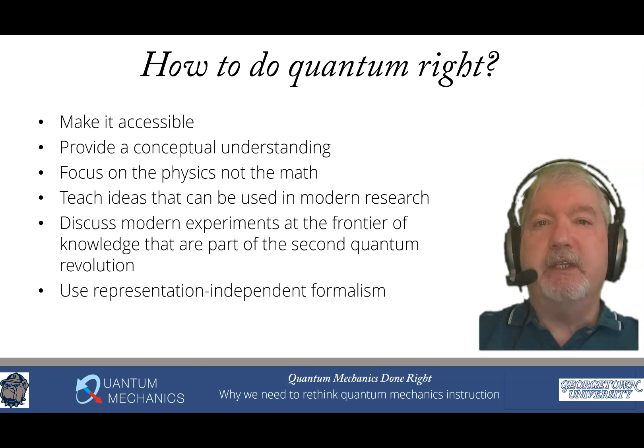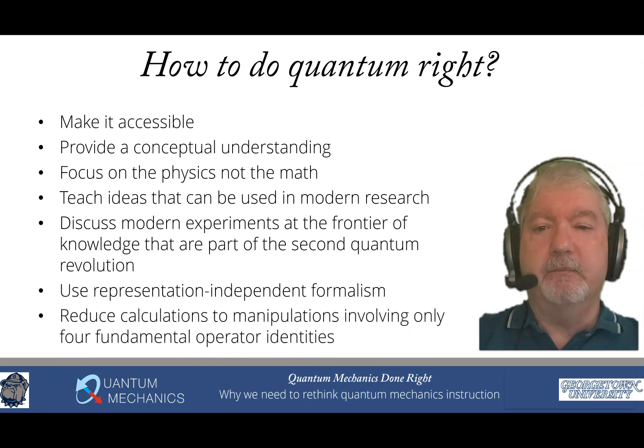Let's use a representation independent formalism. When you took classical mechanics in your freshman year, the instructor spent a lot of time teaching you that a vector is not the three numbers that represent it. It's an abstract object and you could use any coordinate system that you want. Yet when we get to quantum mechanics, we always work in the position representation. That's not the way we should do it. We should work with a representation independent formalism. And doing so, we can actually reduce our calculations to manipulations that only involve four fundamental operator identities. And I'll have more to talk about that in this series.